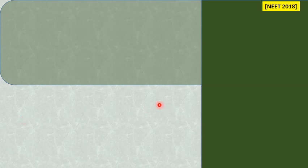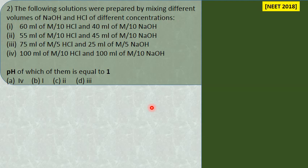Let us see another question from NEET 2018. The following solutions were prepared by mixing different volumes of NaOH and HCl of different concentrations. There are four combinations of acid and base given, and we need to identify which solution has pH equal to 1.